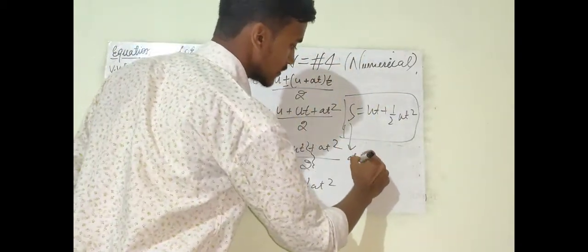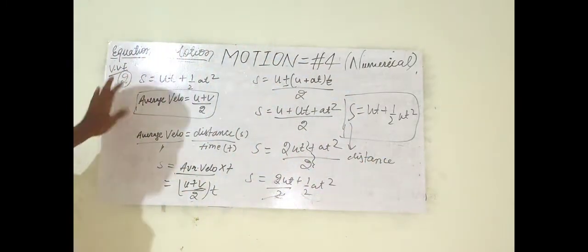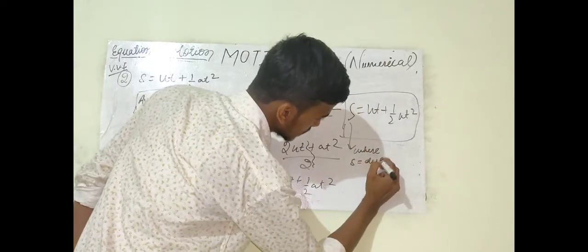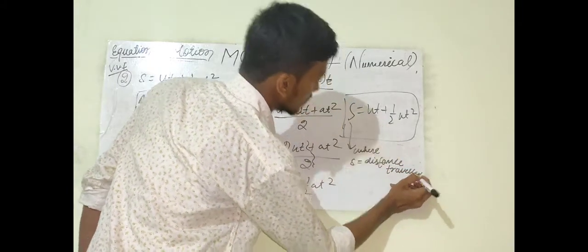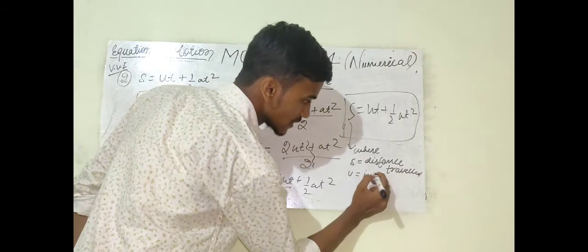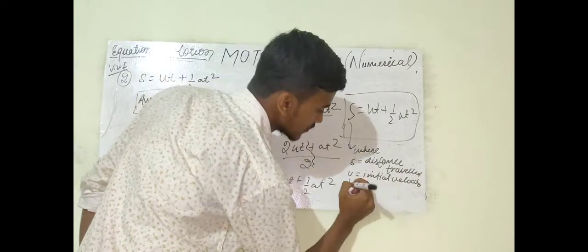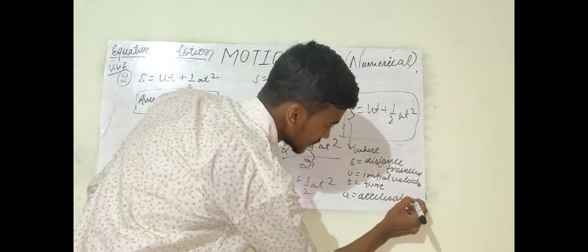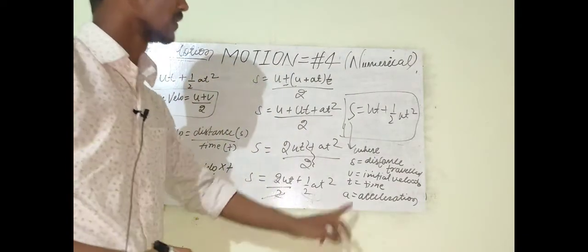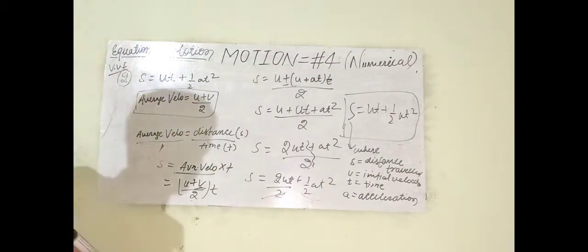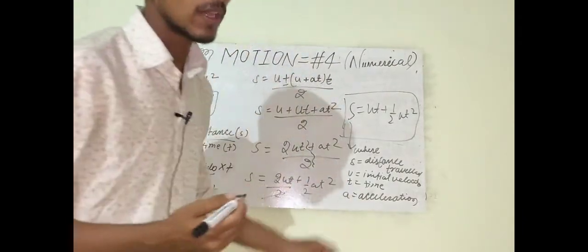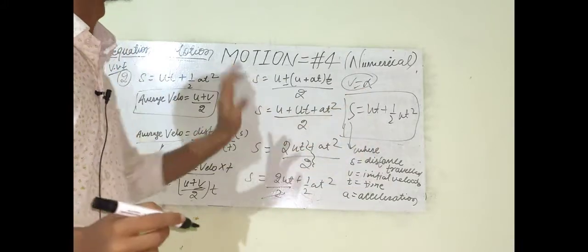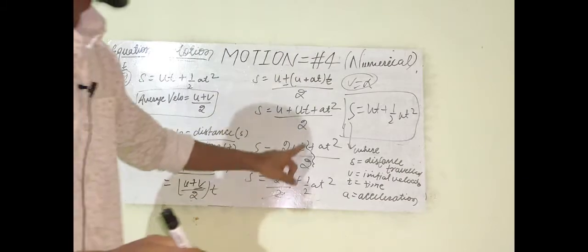S is distance. When writing derivations in an exam, always write 'where' after deriving and define each variable: S = distance traveled, U = initial velocity, T = time, A = acceleration. This is very important. Also note: if V is not known in a numerical, you can use the second equation of motion to solve it.